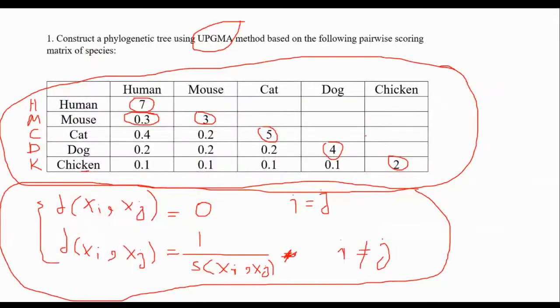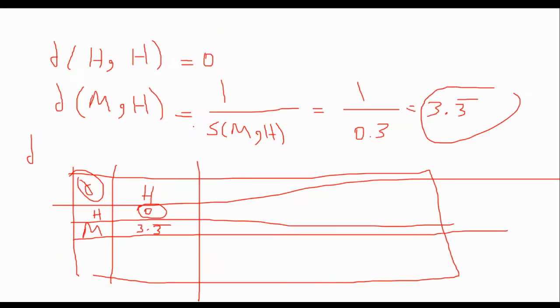For example, so we said don't consider the diagonal, we consider the distance version of these values, don't consider directly from the scoring matrix and construct your phylogenetic tree from here. As soon as you found your distance matrix, then from those values find the minimum.